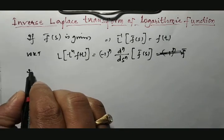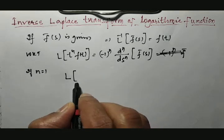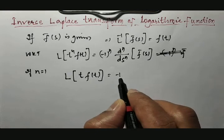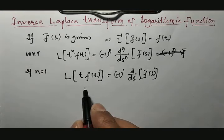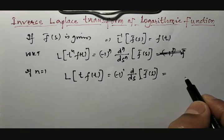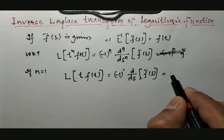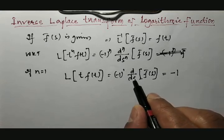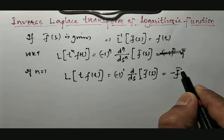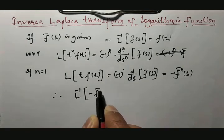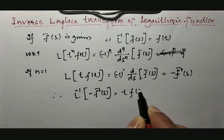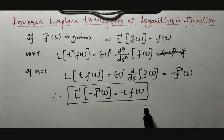Taking the case where n = 1: the Laplace transform of t · f(t) equals (-1)^1 · d/ds of f̄(s), which equals -1 · d/ds of f̄(s). This derivative d/ds of f̄(s) can be treated as f̄'(s). Rearranging, the inverse Laplace transform of -f̄'(s) equals t · f(t). This is a very important result which will help us obtain the inverse Laplace transform of logarithm functions.